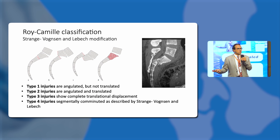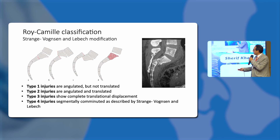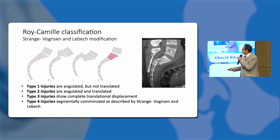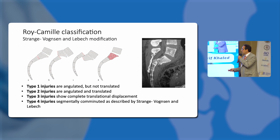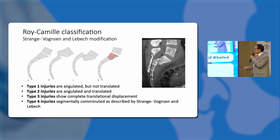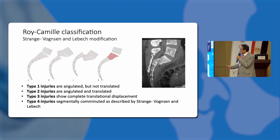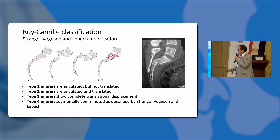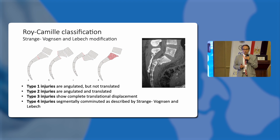The Roy-Camille classification, modified by Stringen, Vonson, and Lubeck, describes type 1 as angulation with no separation, type 2 as angulation and separation, type 3 as complete translation, and type 4 — added by Stringen and Vonson — as compression of one of the vertebrae.